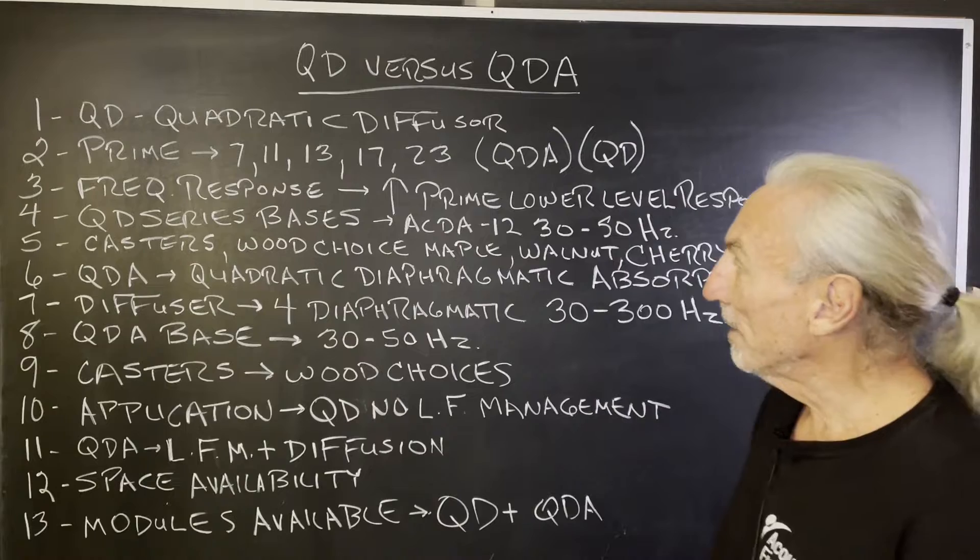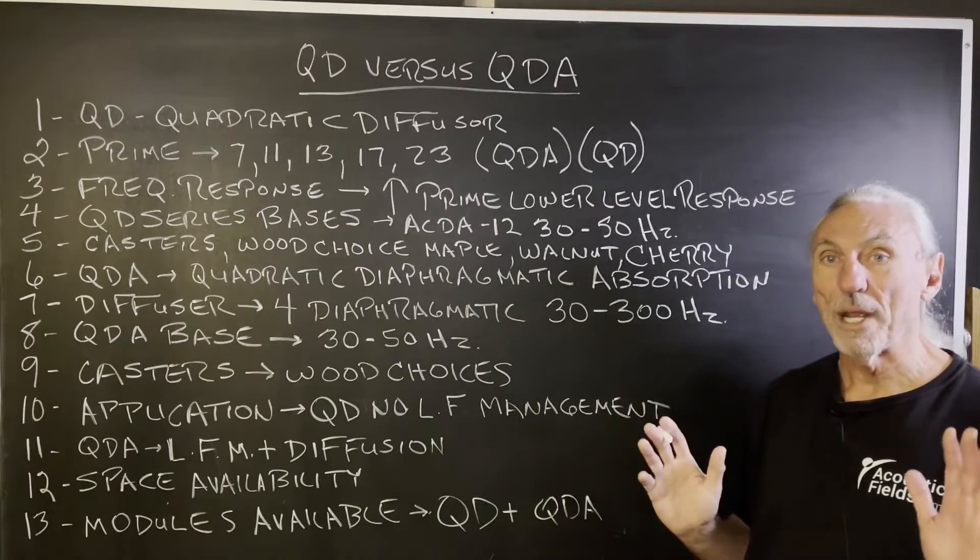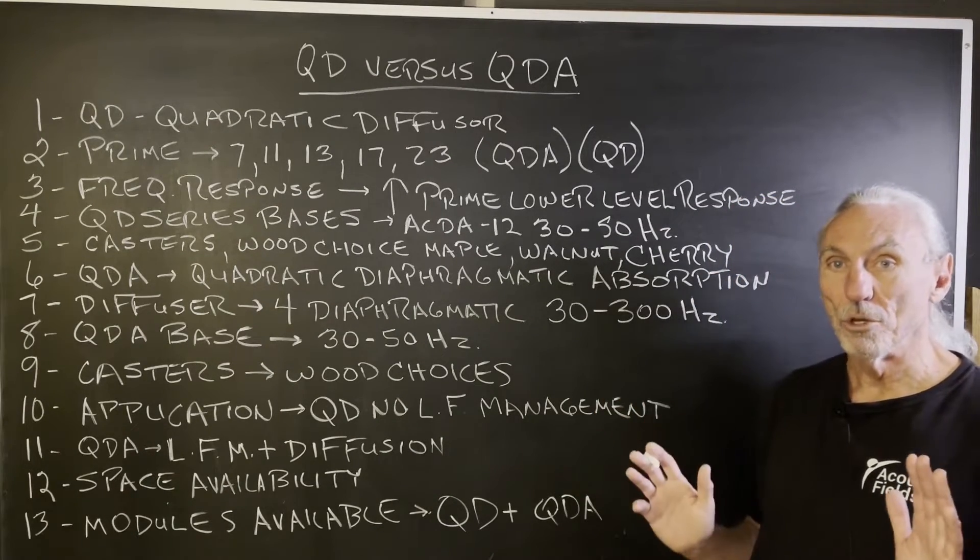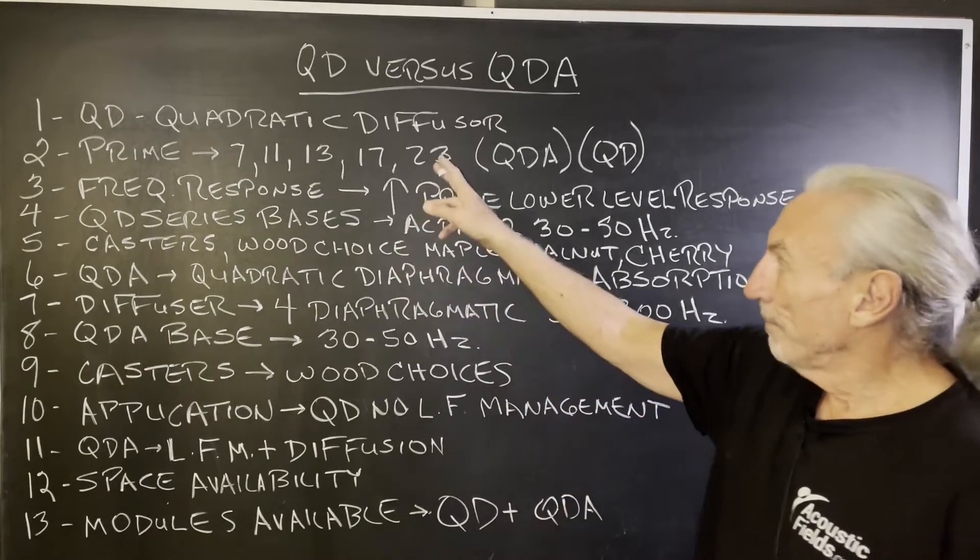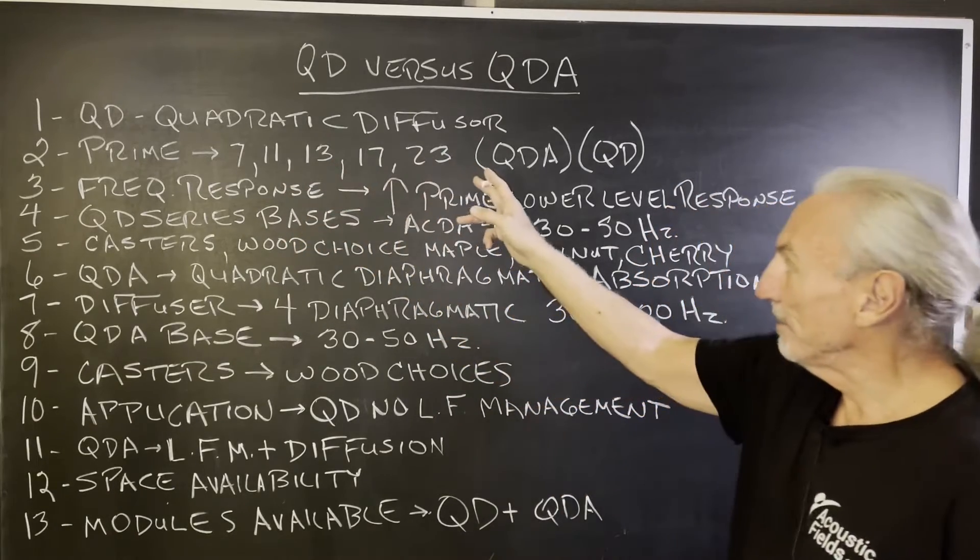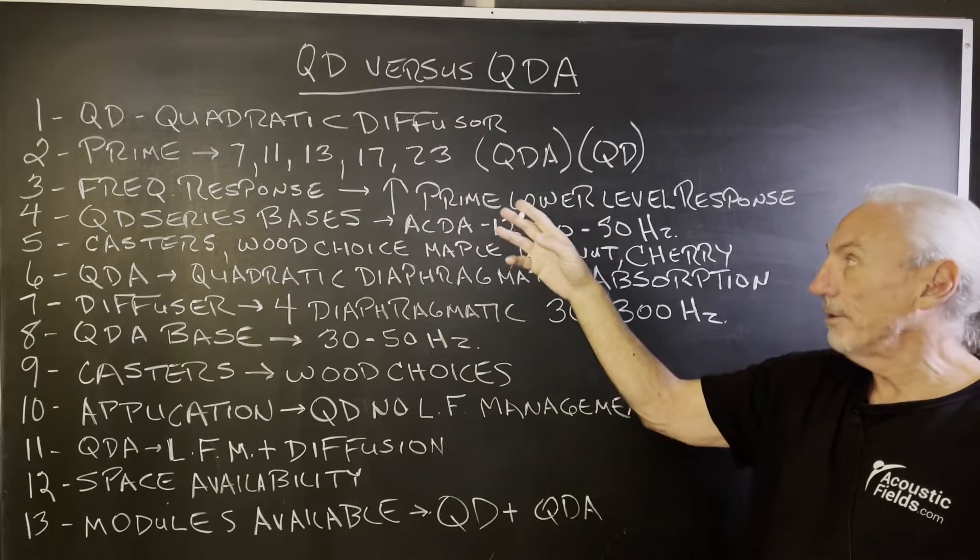The QD stands for quadratic diffuser. It's a straight quadratic diffuser. There's no absorption. Based on prime numbers 7, 11, 13, 17, 23, you can read about all that on the website.